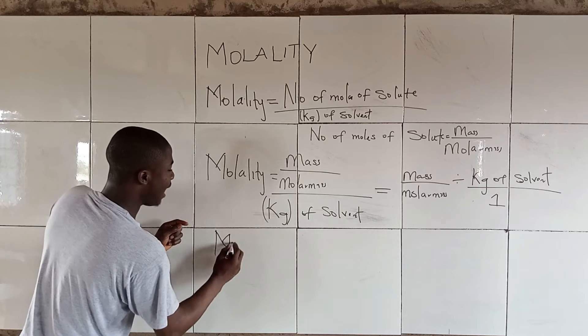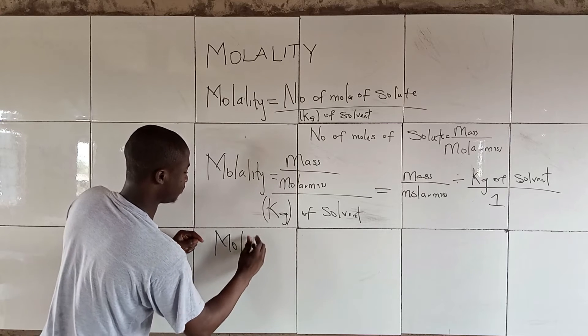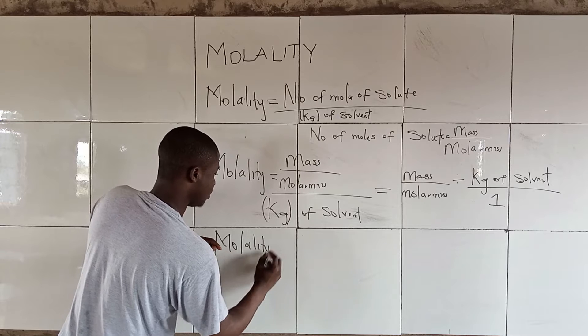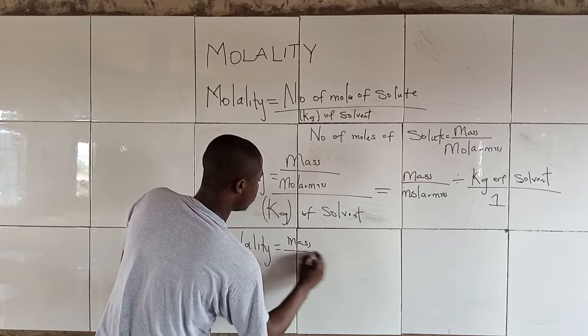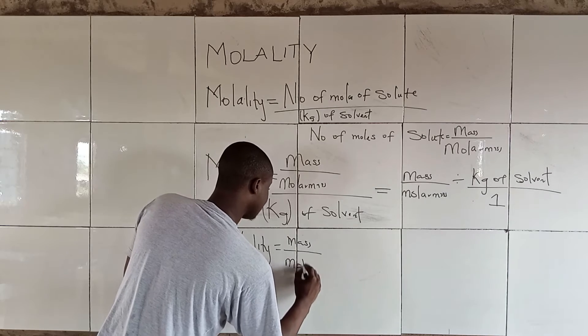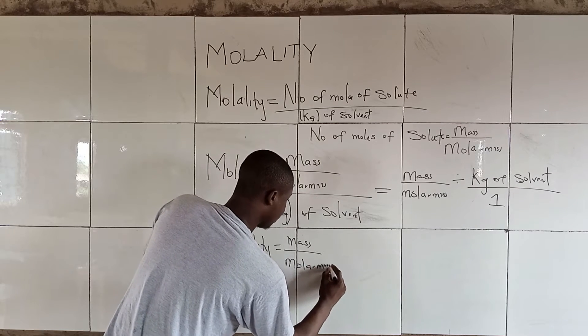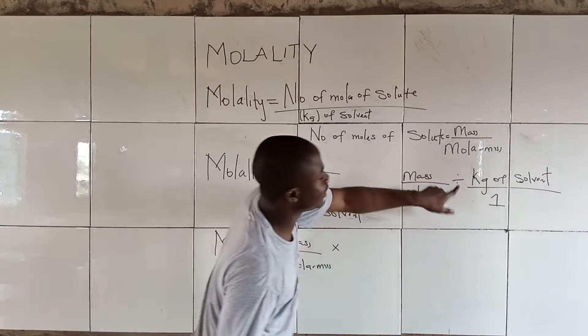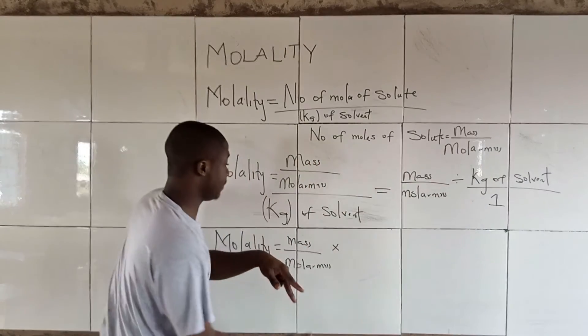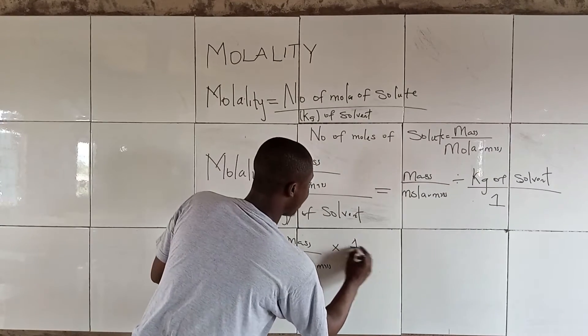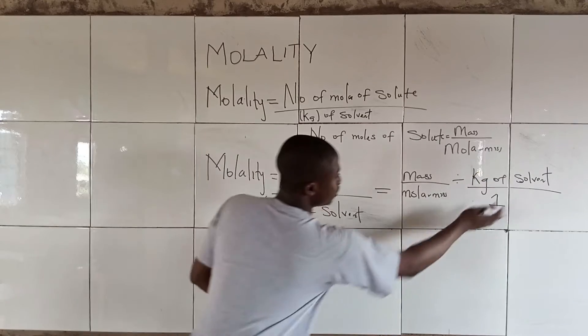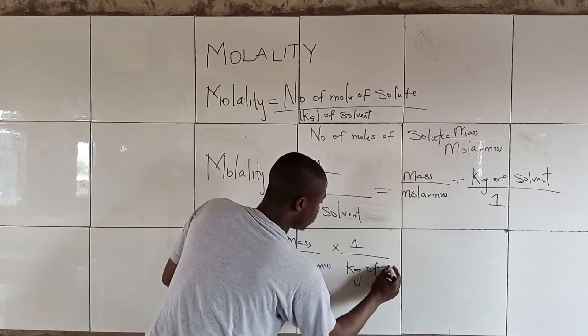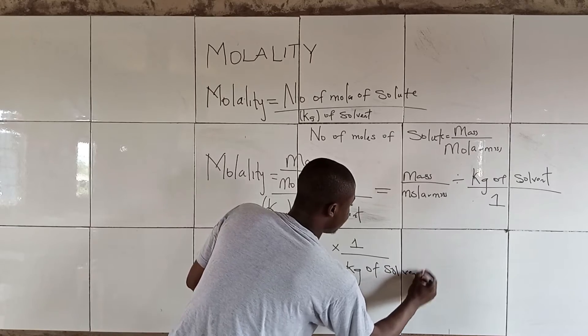So molality will now be equal to mass over molar mass times, because we change the divide sign, so multiplication. So we get 1 over kg of solvent, so they are going to interchange, so it becomes kg of solvent.